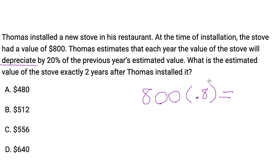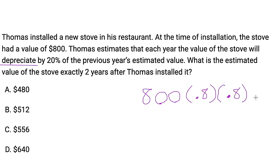The question asks for the estimated value of the stove exactly two years after Thomas installed it. So we're not just multiplying by 0.8 once — that would be one year. We want to multiply by 0.8 twice: the first 0.8 is for the first year, and then it depreciates again the following year. So 800 times 0.8 times 0.8 — throw that into the calculator — and we get 512.